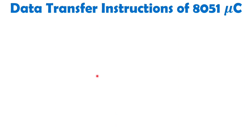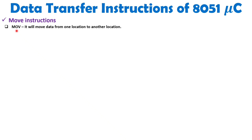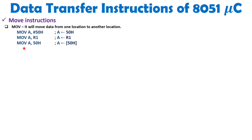First I'll explain MOV instructions. MOV transfers data from one location to another. When you write MOV A, #50H, the immediate value 50H is copied into the accumulator. When you write MOV A, R1, the content of R1 is transferred into the accumulator. When you write MOV A, 50H (without the hash), 50H is treated as an internal RAM address, and the data at that location is moved into the accumulator.